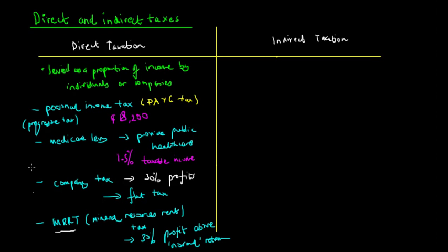Indirect taxes, they're a little bit more complicated. So indirect taxes are added taxation onto the price of a good or service. So this is just going to make the good or service more expensive, and we can look at this in terms of a supply and demand graph.